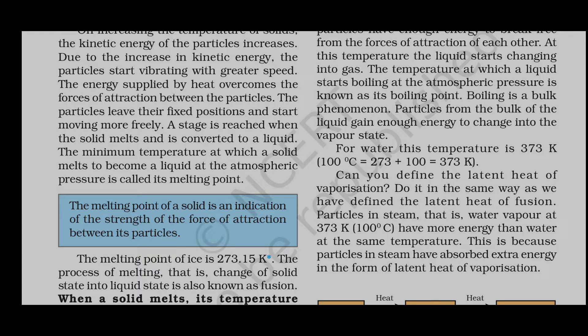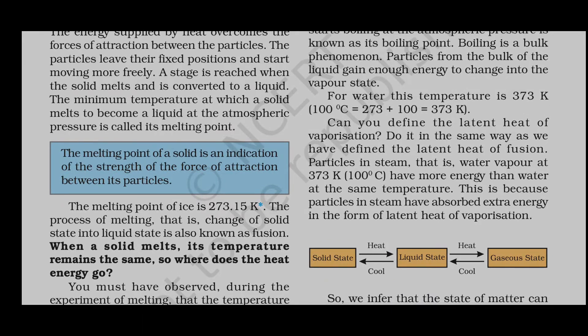The temperature at which a liquid starts boiling at atmospheric pressure is known as the boiling point. Boiling is a bulk phenomenon — the particles from the bulk of the liquid gain enough energy to change into the vapor state. For water, this is 373 Kelvin, that is 100 degree Celsius.